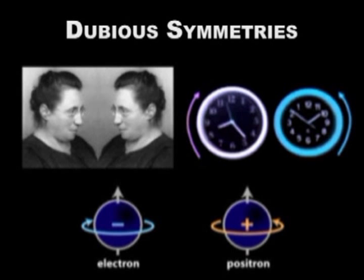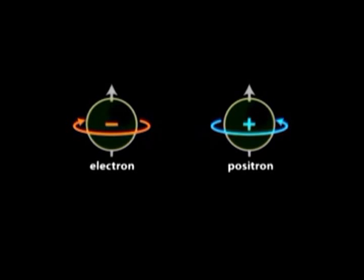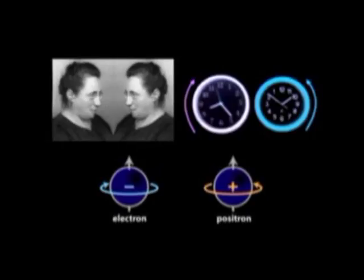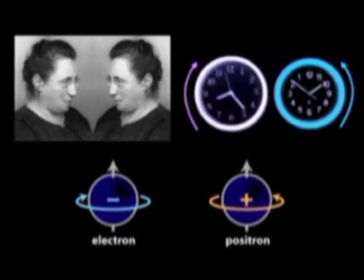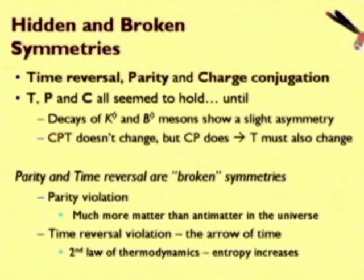First, we switch the direction of time, and we do the left-right switch, and we switch all these charges. We apply all three of these apparent symmetries at once and, lo and behold, the product of them all seems to hold — it holds in every case. But if we remove the time-reversal symmetry and apply just the left-right parity and the matter-antimatter switching of charge, then there's a broken symmetry.